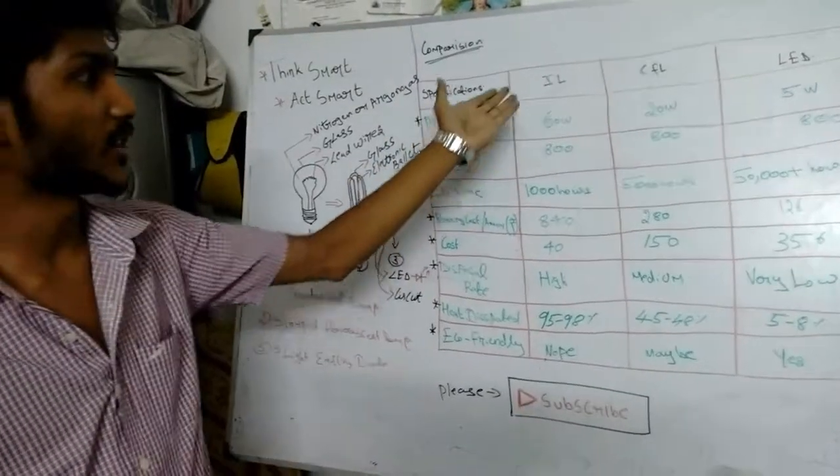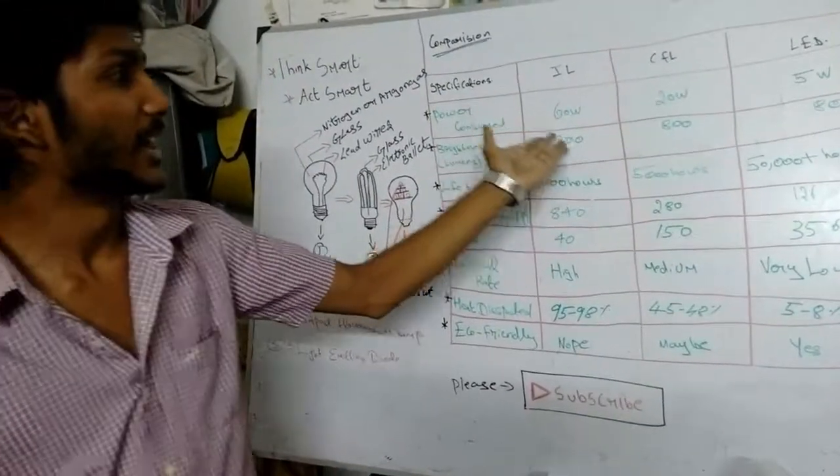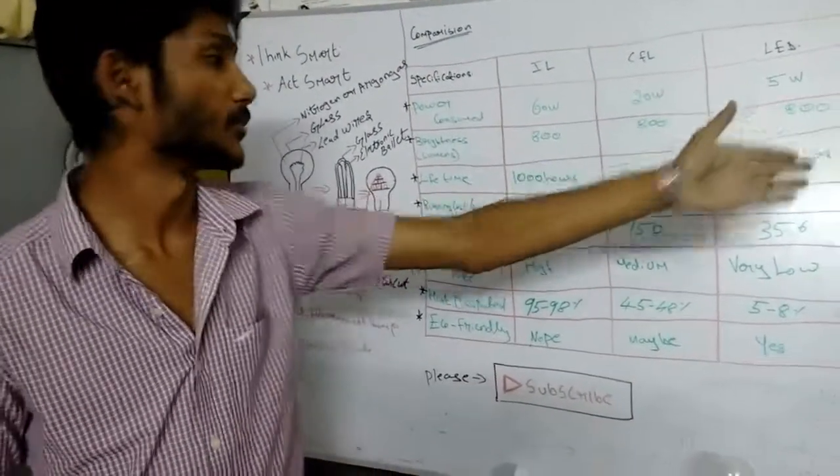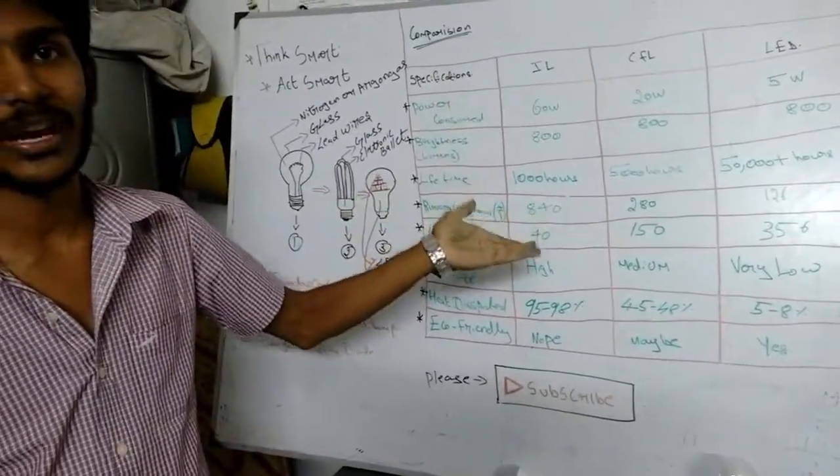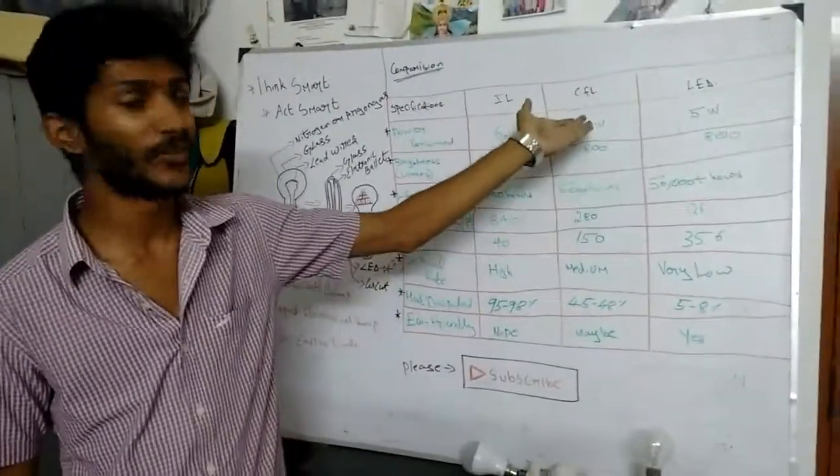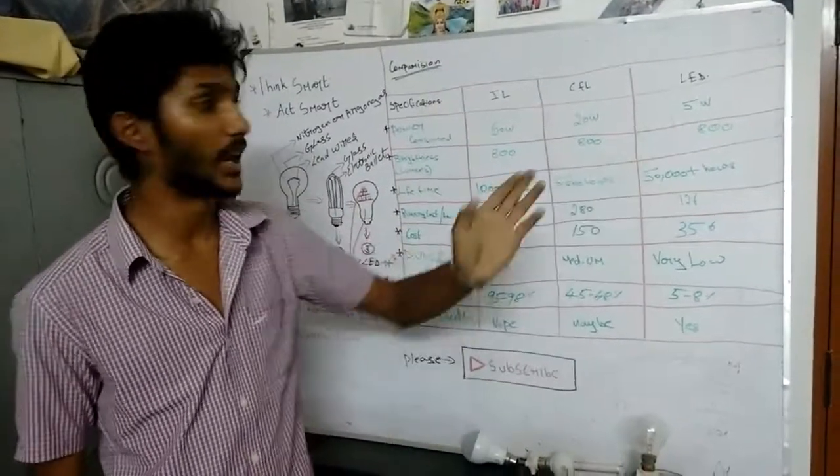The brightness of incandescent lamp will be 800 lumens. It will be the same for both lamps also. The lifetime will be 1000 hours for incandescent lamp, 5,000 hours for CFL, and 50,000 hours plus for LED.